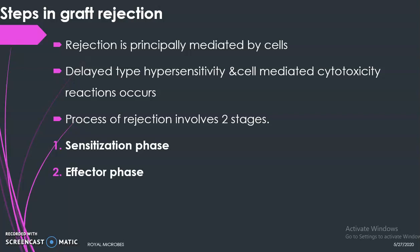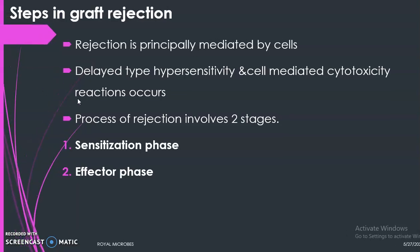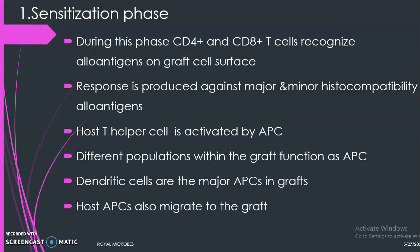The steps involved in graft rejection are principally mediated by cells. The main reactions are delayed hypersensitivity reaction and cell-mediated cytotoxicity. The rejection process involves two stages: the sensitization phase and the effector phase. In the sensitization phase, CD4+ and CD8+ T cells — T helper cells and T cytotoxic cells — recognize allo antigens on the surface of the graft. A response is produced against major and minor histocompatibility allo antigens. Most T helper cells are activated by APCs; the major APCs in the graft are dendritic cells.